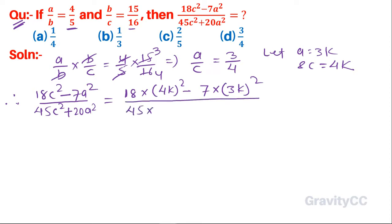45×(4k)² + 20×(3k)². So this equals 18×16k² - 7×9k² over 45×16k² + 20×9k².